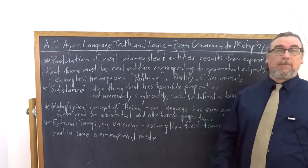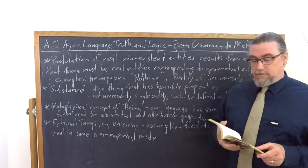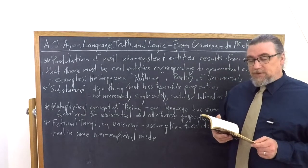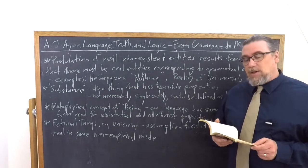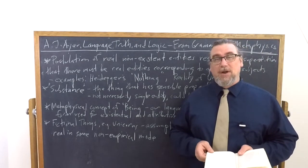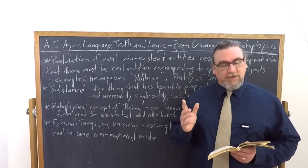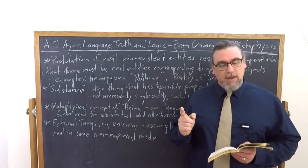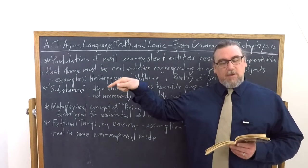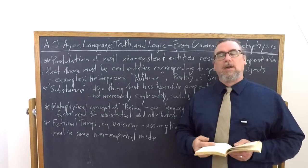So a prime example of this, he talks about at great length is substance. He mentions, he just talked about this a little bit earlier. He says that it happens to be the case that we cannot in our language, he means English, of course, but we can think of pretty much all the Indo-European languages. We cannot refer to the sensible properties of a thing without introducing a word or phrase which appears to stand for the thing itself as opposed to anything which may be said about it.